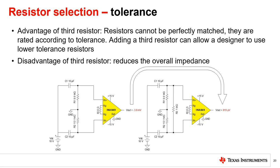Reducing the input impedance also changes the corner frequency of the DC blocking high-pass filter. Depending on the application, this corner frequency may need to be adjusted by increasing the size of the coupling capacitor. In the next few slides, we will discuss a few application examples.